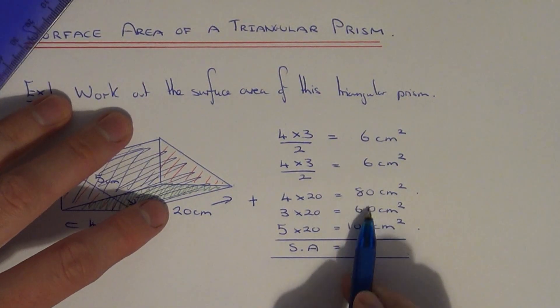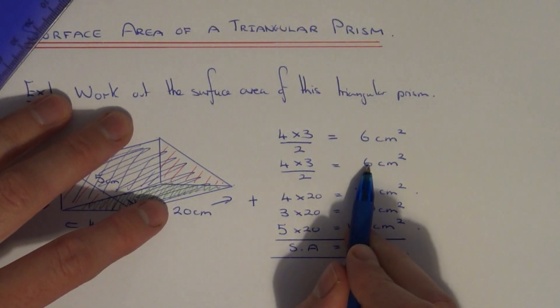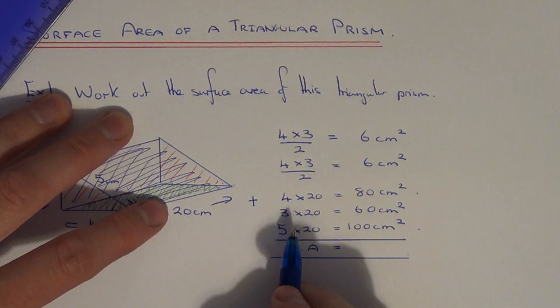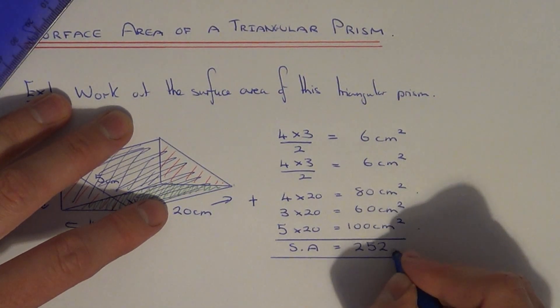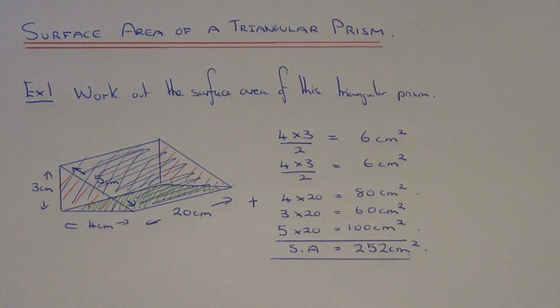So 100 add 80, 180, add 60, 240, add on 6, 246, add another 6, 252. So the final surface area of this triangular prism is 252 cm squared.